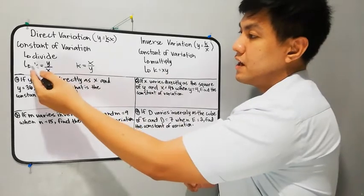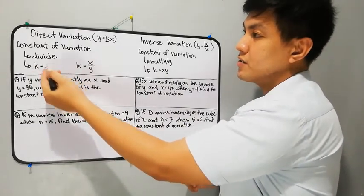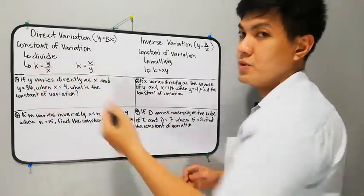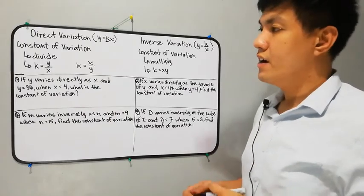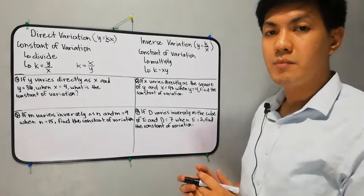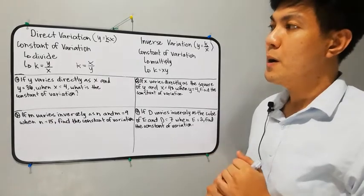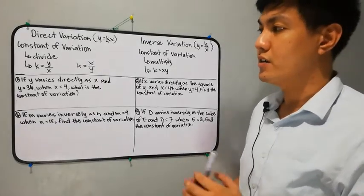So we have k is equal to y over x for direct variation — we divide. Now let's look at examples to better understand how to find the constant of variation.